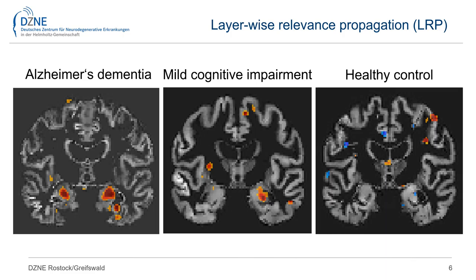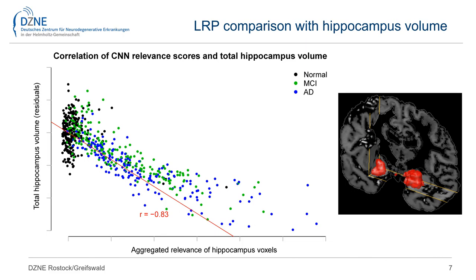The results showed high sensitivity of the neural network model to the hippocampus area. Hippocampus volume is actually the best established MRI marker for Alzheimer's disease and memory impairment. Across all diagnostic groups, CNN relevance scores for the hippocampus area showed a high concordance with hippocampus volume.